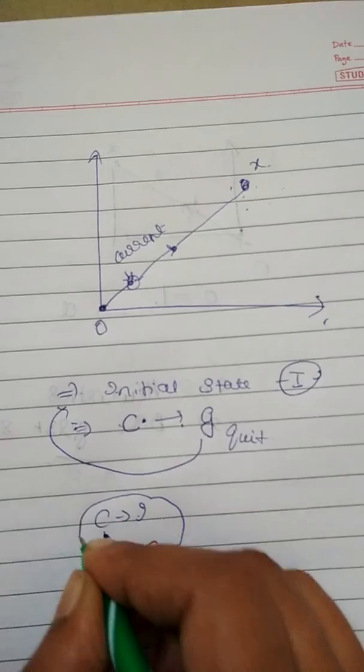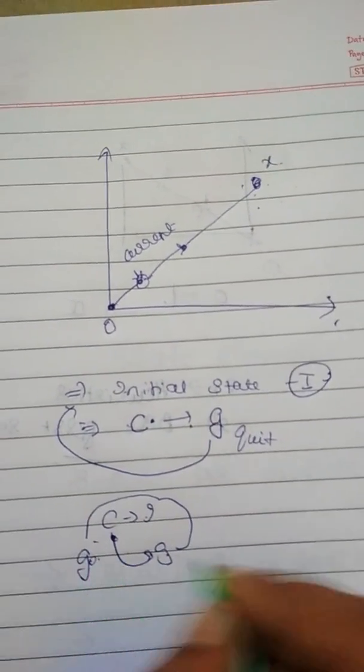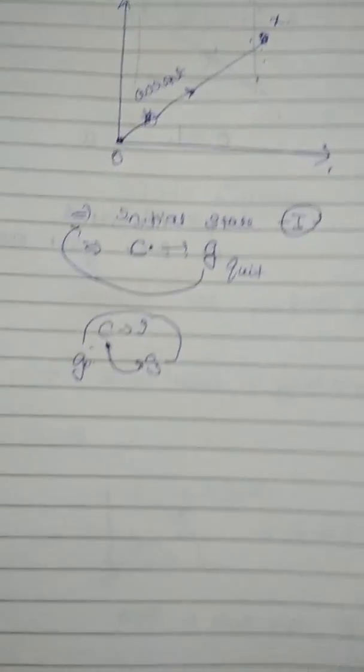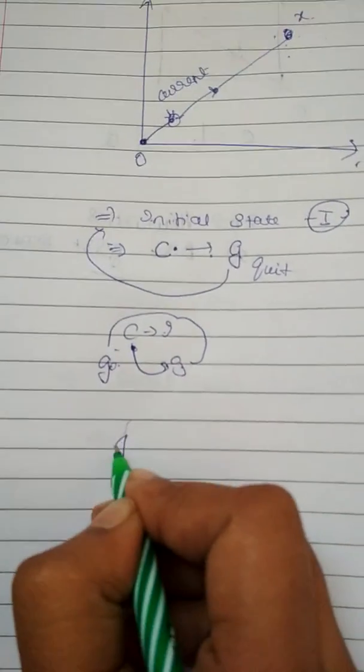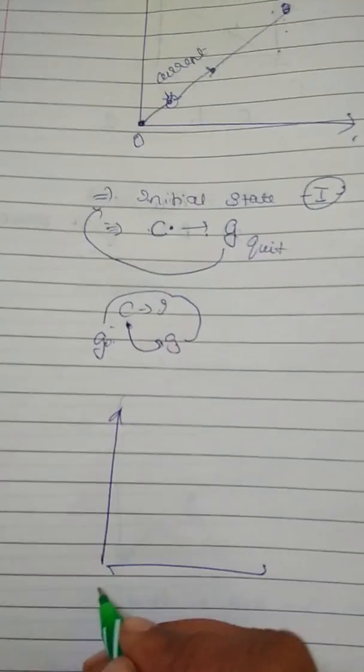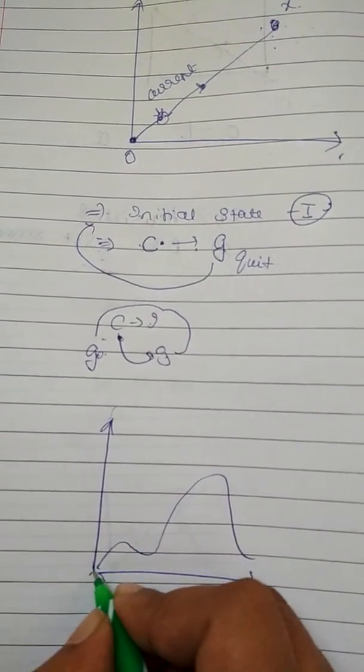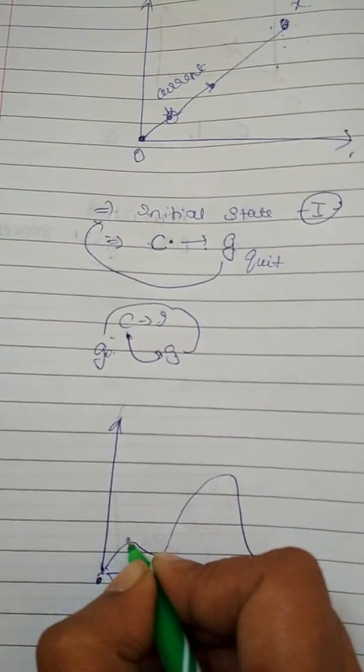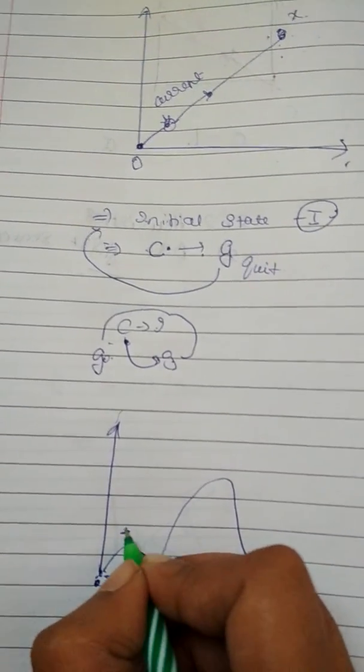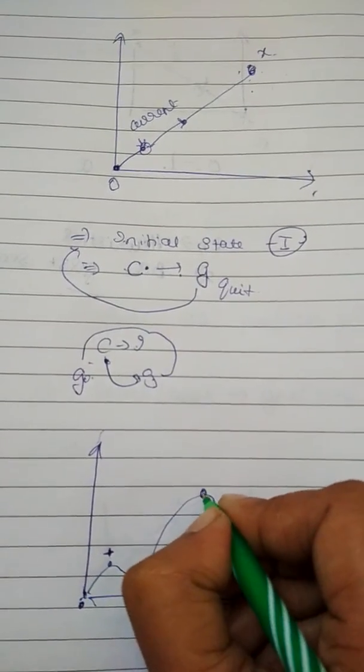There is a problem in hill climbing. What is that problem? Suppose your hill is something like this. The minute user reaches here, the user will think this is a goal state.